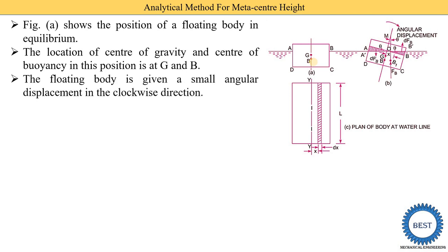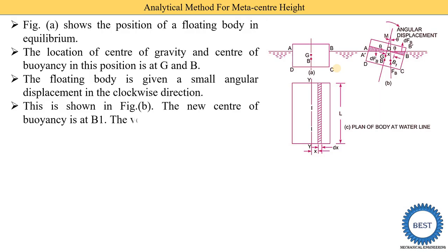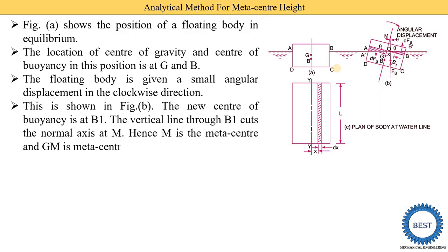The floating body is given a small angular displacement in a clockwise direction. Here in figure B, we can see what happens when the small angular displacement is given to the body. The new center of buoyancy is at B1. Earlier, B was the center of buoyancy, but when we give a small angular displacement, this center of buoyancy moves from B to B1. From this B1 point, we draw one vertical line through B1, which intersects the normal axis of the body. When this normal axis and the vertical line from B1 intersect, it is called point M.